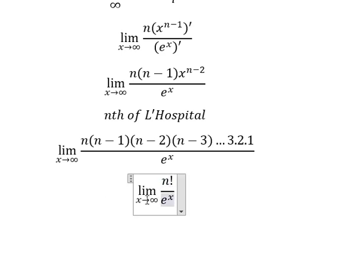Now when x goes to positive infinity, this one will go to positive infinity. N factorial divided by positive infinity, you get about zero. And that is the final answer.